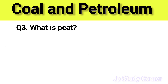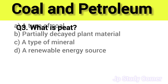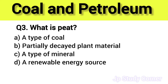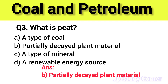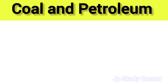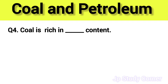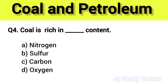Question number three: what is peat? The right answer is option B — partially decayed plant material. Question number four: coal is rich in which content? The right answer is option C — carbon.